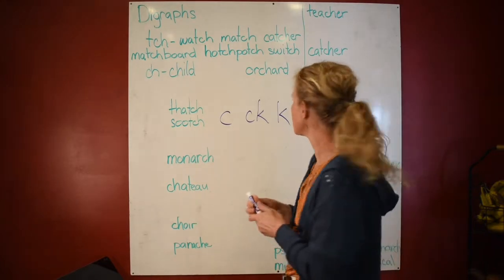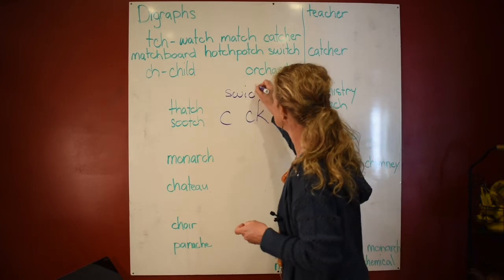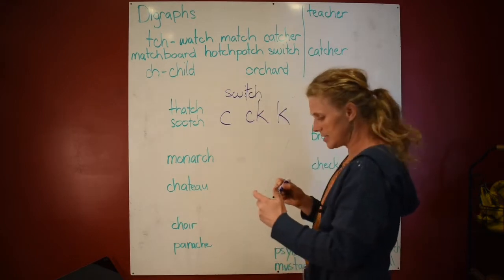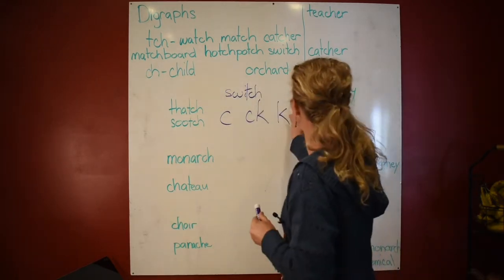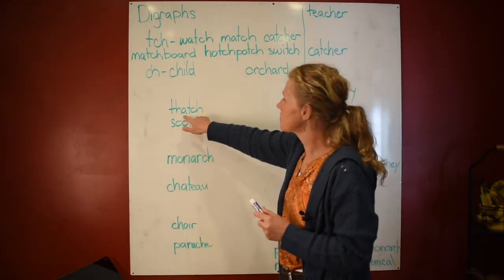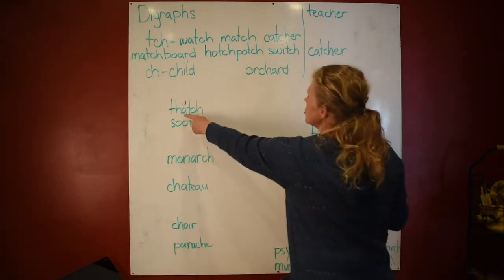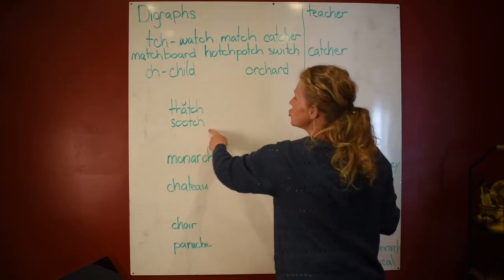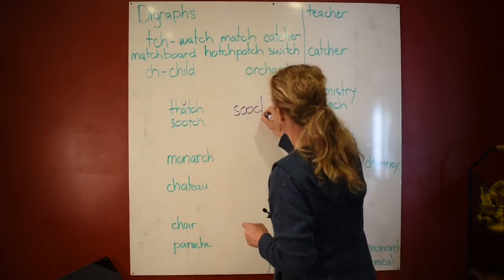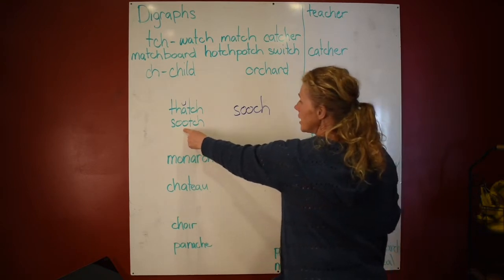We can't spell 'switch' the wrong way — that is wrong because this is a short vowel. It has to have TCH in there. Now look at 'thatch' — this is a short vowel saying its short sound, so it's spelled with TCH. But 'sooch' — spelled that way — is wrong as a regular word. This is how you would spell it. You don't do a TCH; it has to be a short vowel, not a vowel team.